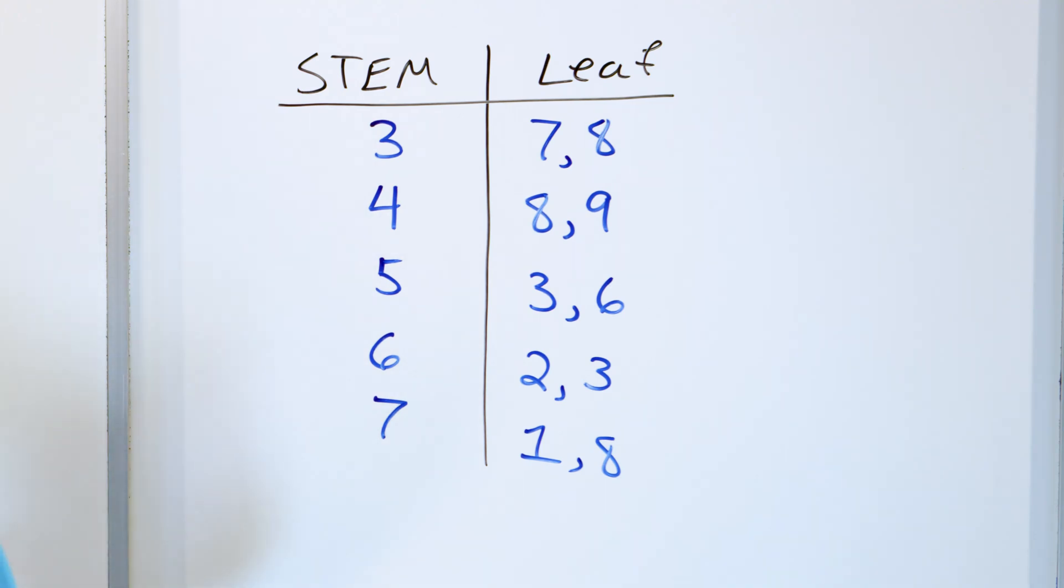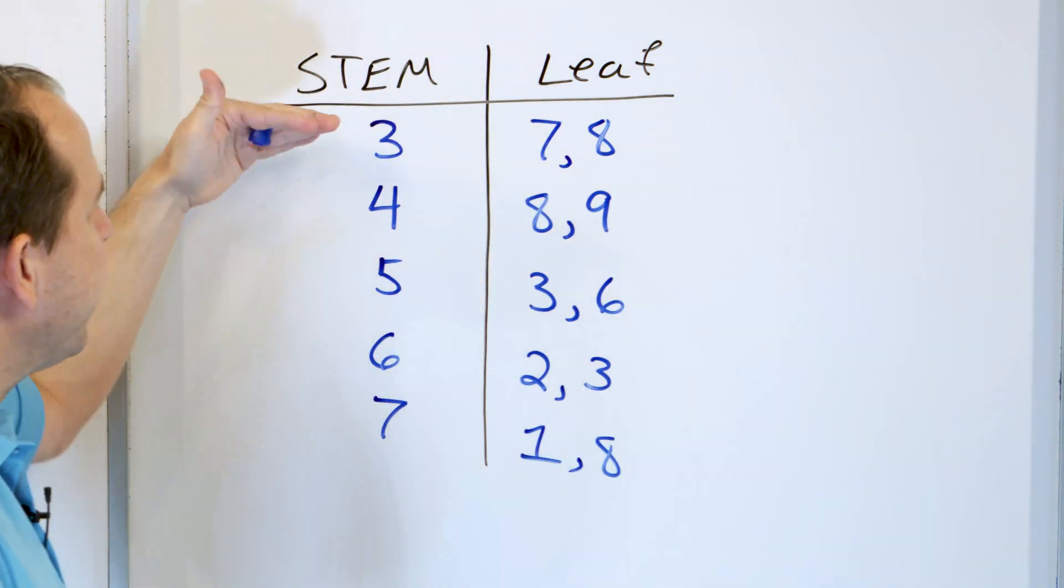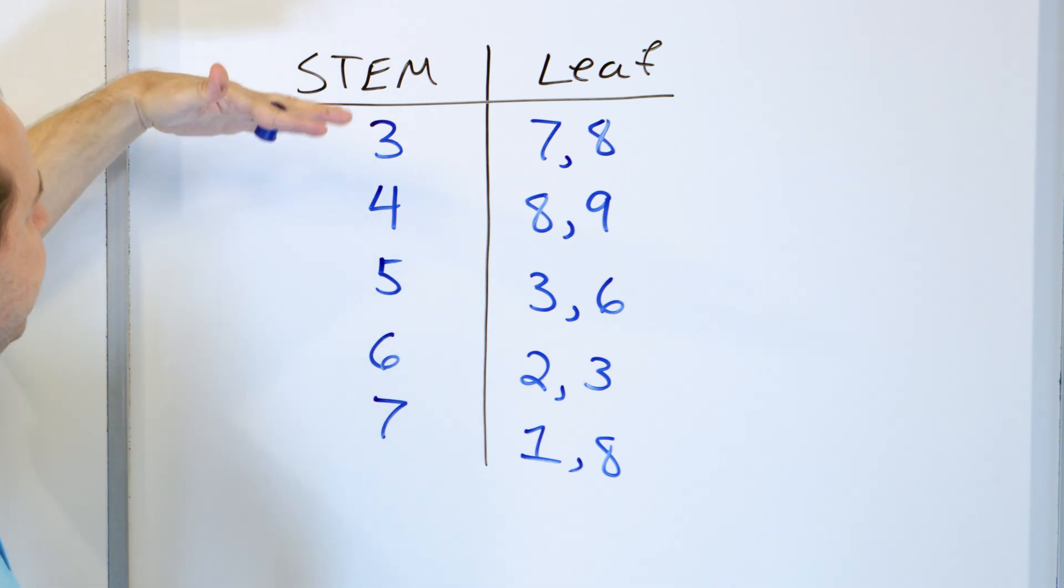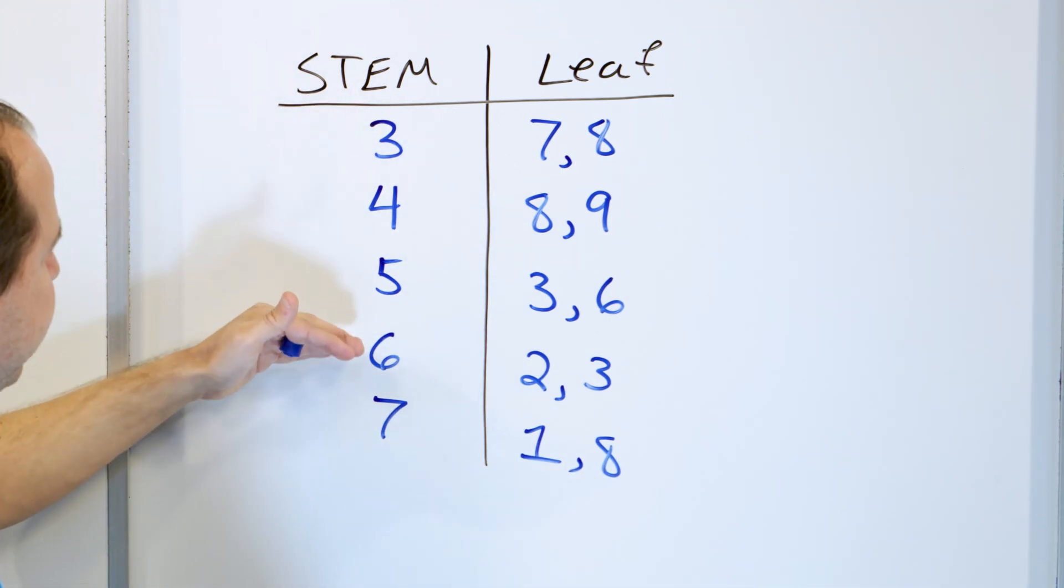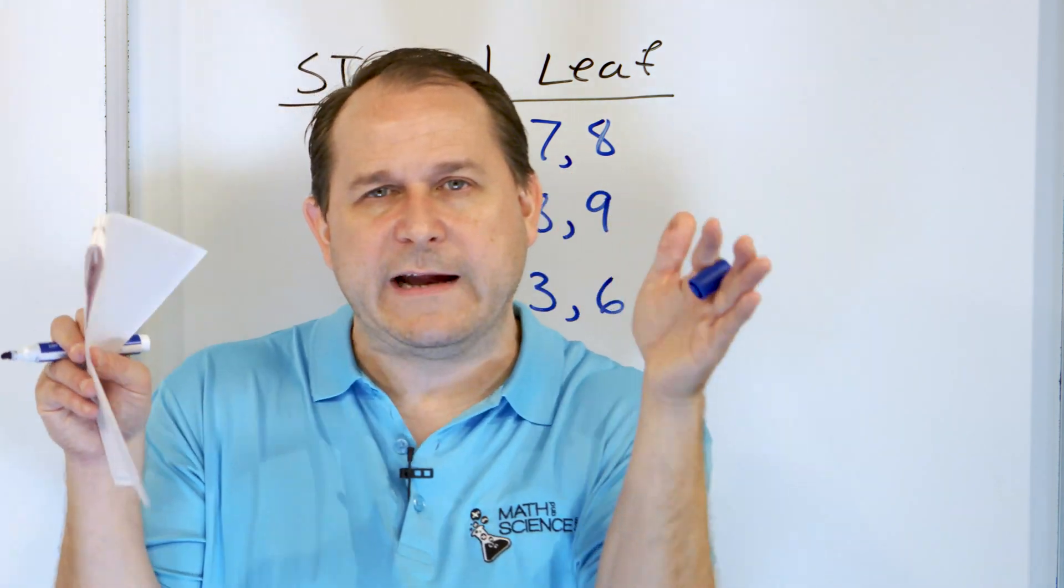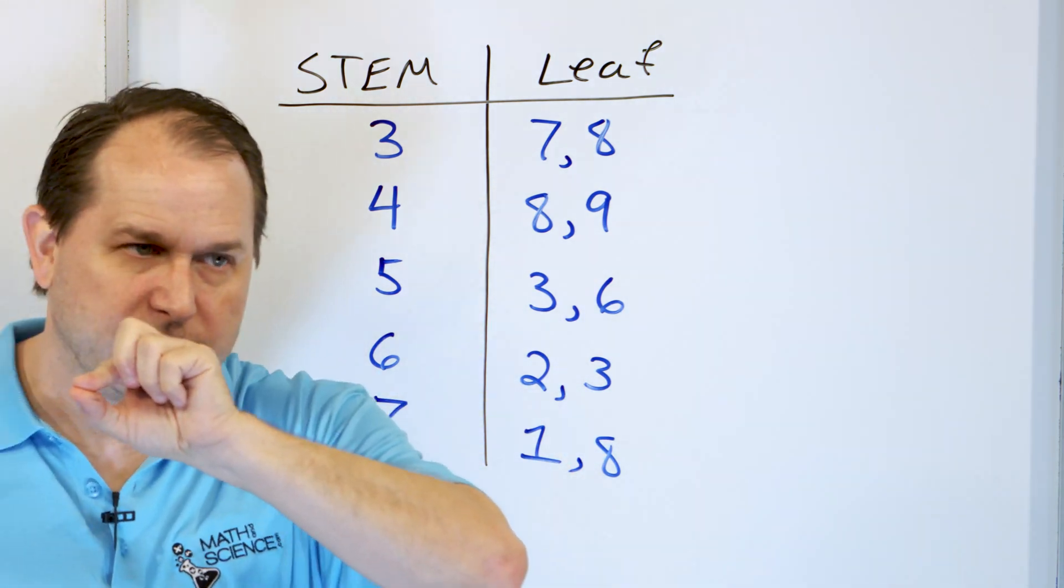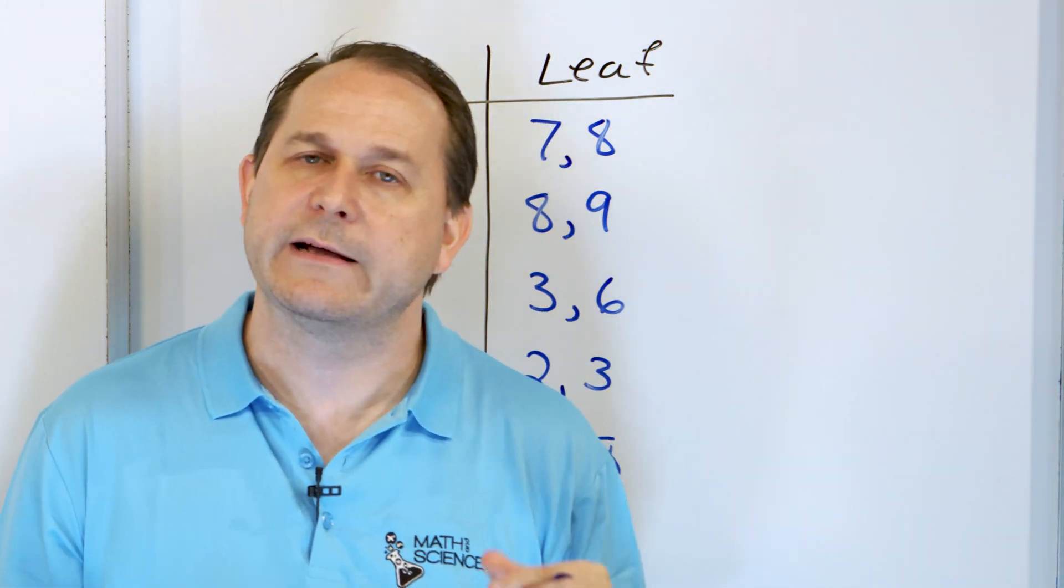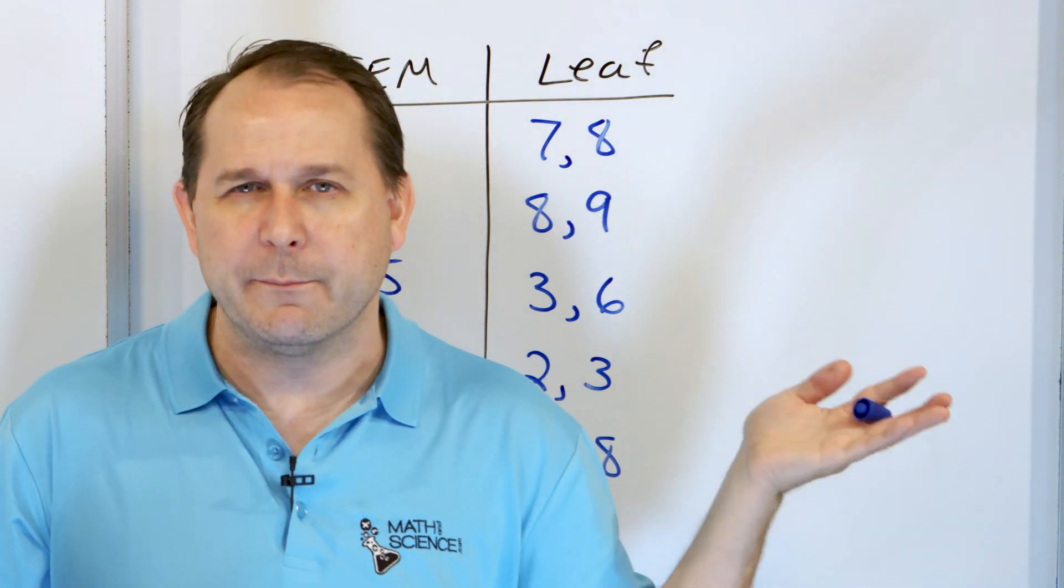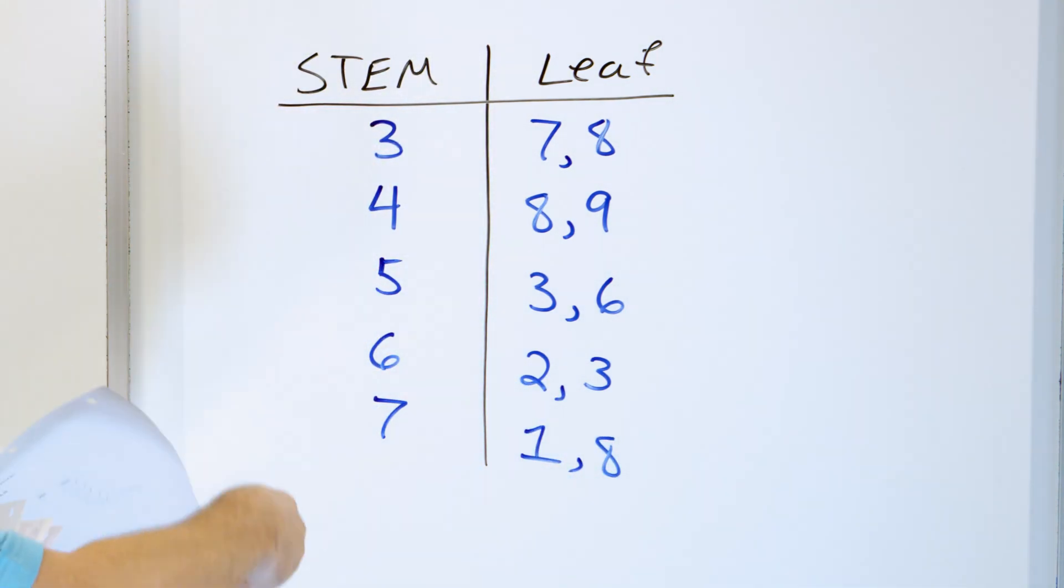Now what does this tell you? It tells me at a glance, without having to look through a whole list of numbers just in a row, it tells me that I have nothing less than 30 in this list. Anything in the 20s, the teens or the single digit, I don't have any data at all. And I don't have anything in the 80s or above. And then in between the 30s, the 40s, the 50s, the 60s, and the 70s, the data is very evenly distributed. It's very useful to know that in the range of the data I have, it's very evenly distributed. What if I had lots and lots of data points in the 70s, then this leaf chart would go off to the right with lots and lots and lots of numbers. And I could see immediately without pouring through pages of numbers that I have lots of data in the 70s. And so it's very, very useful to look and see the distribution of the data that you have.